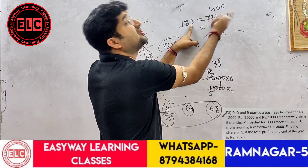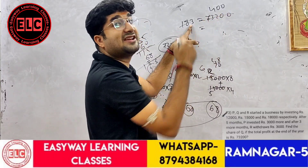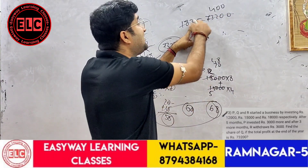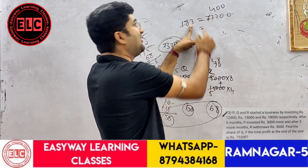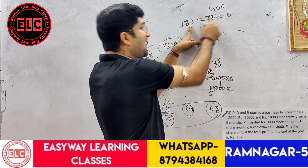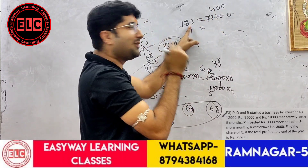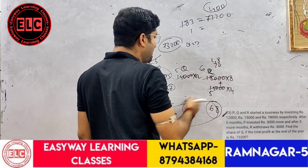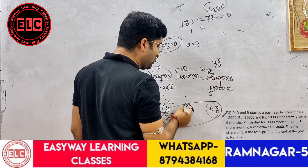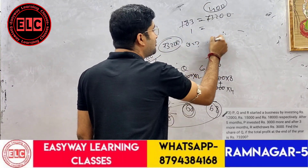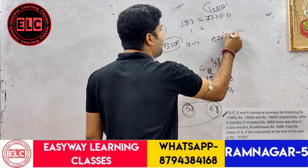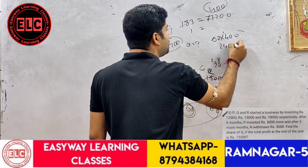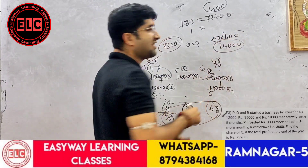How much do you multiply? 3 times 4 equals 12. How much do you multiply? 1 times 2 equals 400. How much do you do? 16 to 400. How much do you do? 20,000.